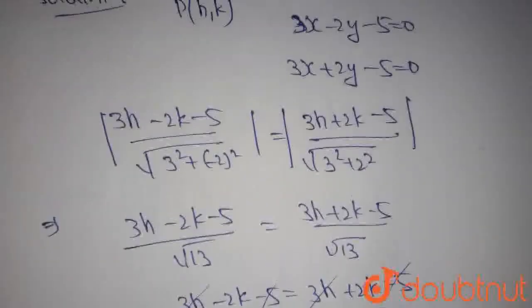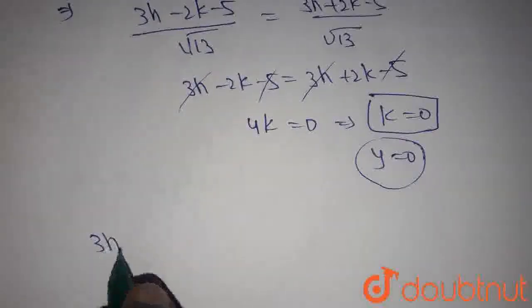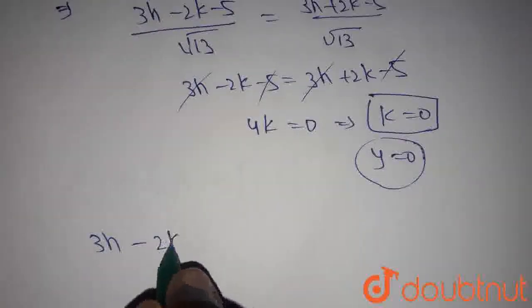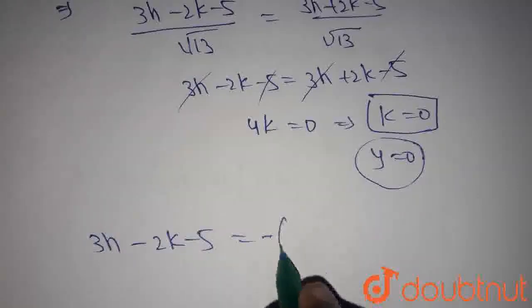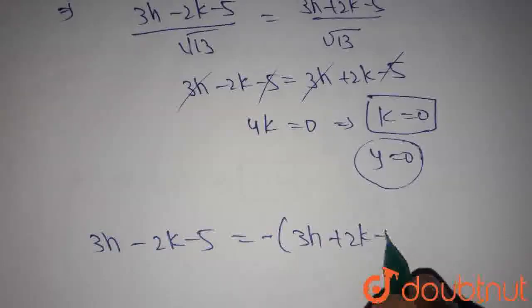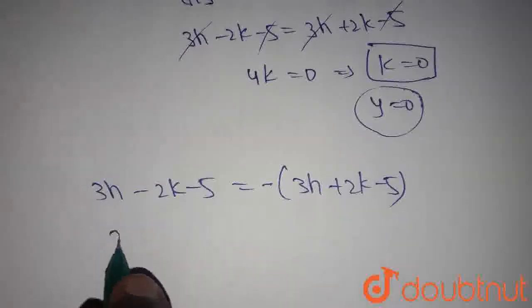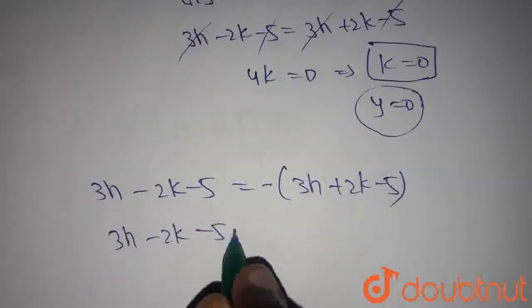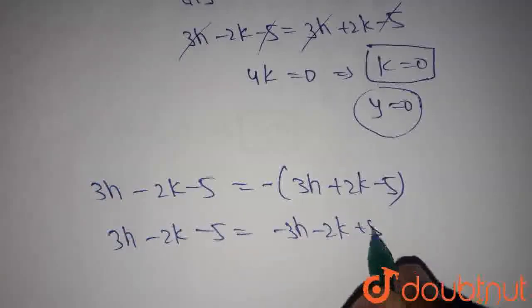Similarly, if we consider the negative sign here, we get 3h-2k-5 = -(3h+2k-5). The denominators on both sides cancel out. We get 3h-2k-5 = -3h-2k+5.